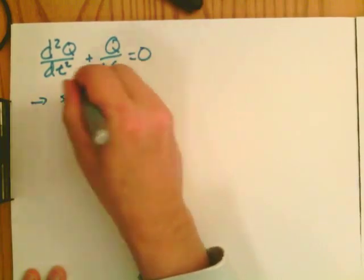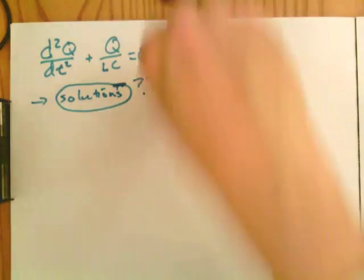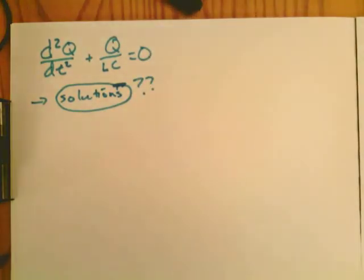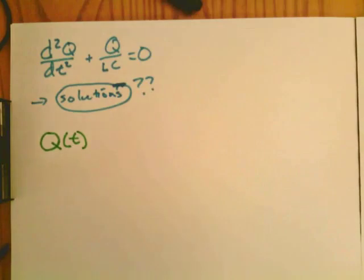So how do we do that? Well, we use the usual trick. We guess the solution. In this case, we're looking for a function whose second derivative is the same within a constant plus a negative constant. And of course, that corresponds to sines and cosines.